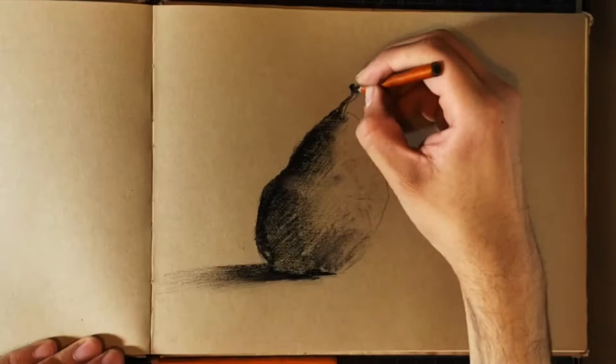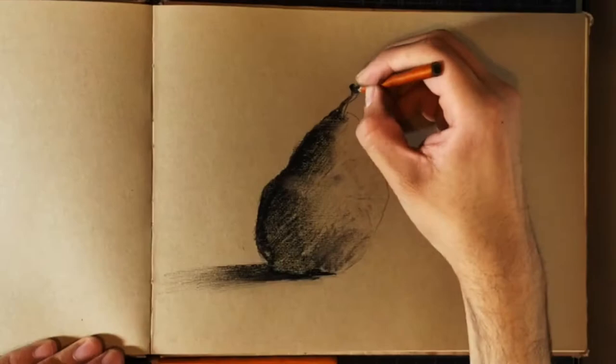I continue with a kneaded eraser to show some highlights of the pear. Finally I will use my white charcoal pencil.